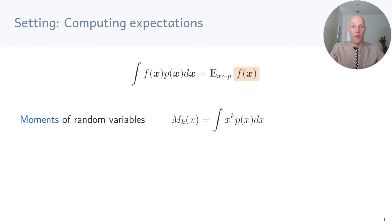For example, if you want to compute the moments of a random variable, we need to solve the integral of x to the power k times p of x, which is exactly the expected value of x to the power k with respect to p.